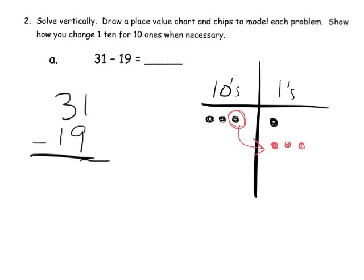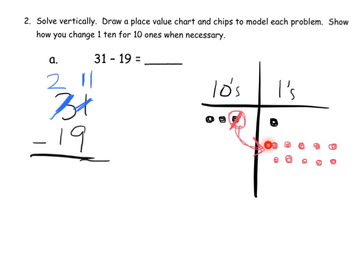We count out 10 ones: 1, 2, 3, 4, 5, 6, 7, 8, 9, 10. That ten dot is gone because we cashed it in for 10 ones. So what does that look like in our standard algorithm? Instead of having three tens, we now have two tens — you can see that right here. And instead of having one 1, we now have 11 ones, because we cashed in a 10 for 10 ones.